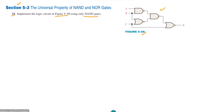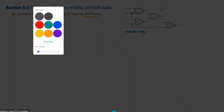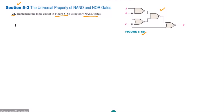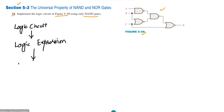So what will be the strategy here? First, we start with the logic circuit. From this logic circuit we have to find the logic expression, and from this logic expression we will implement it using NAND gates.